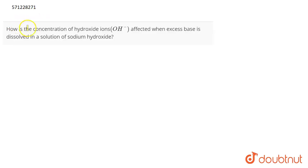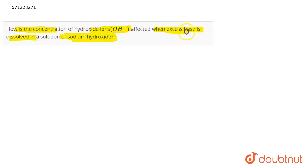The question is: how is the concentration of hydroxyl ions, which are OH⁻ ions, affected when excess base is dissolved in a solution of sodium hydroxide?